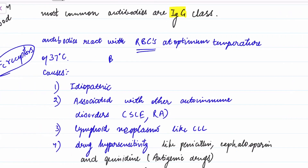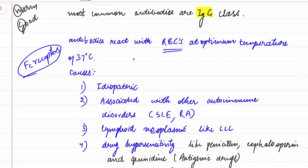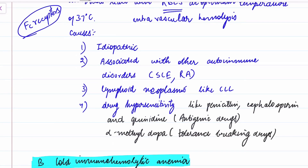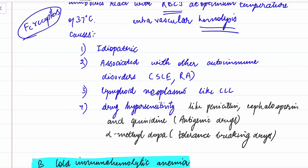These spherocytes are sequestered and destroyed in the spleen, resulting in extravascular hemolysis. Because RBCs are destroyed in the spleen, you will see splenomegaly in these patients.